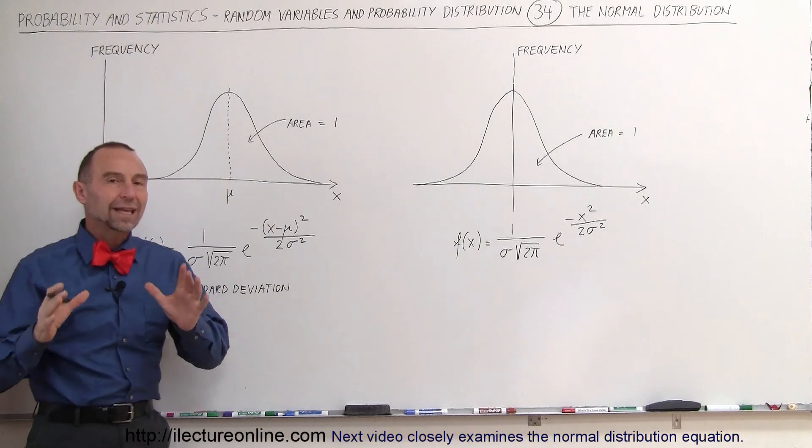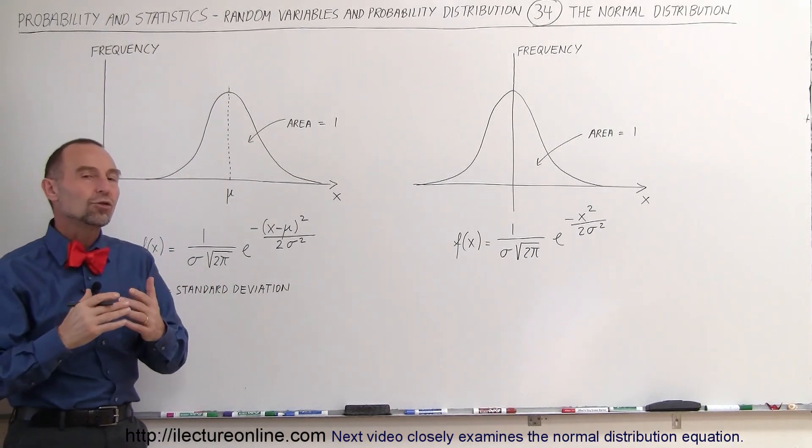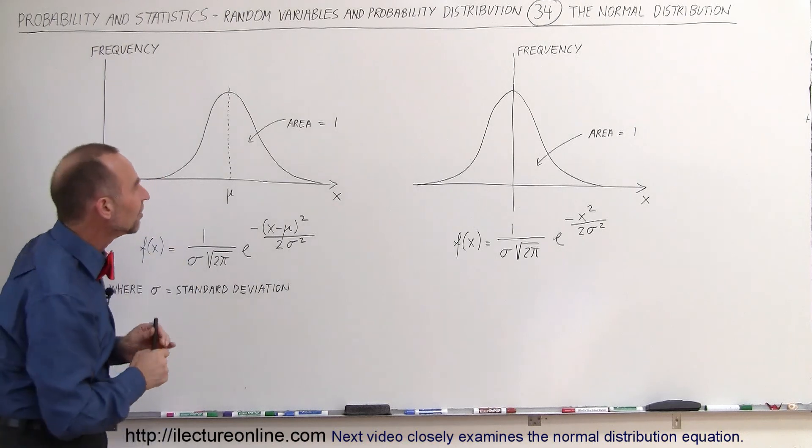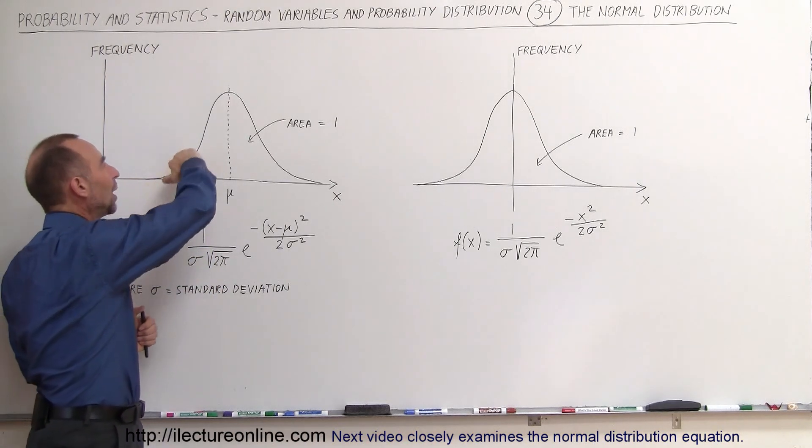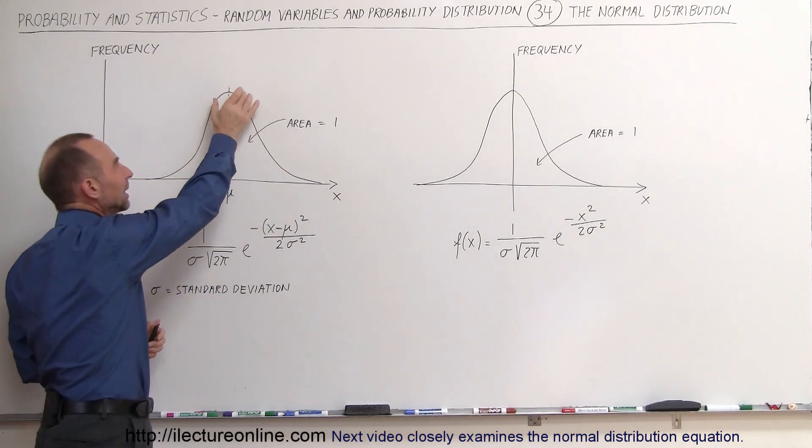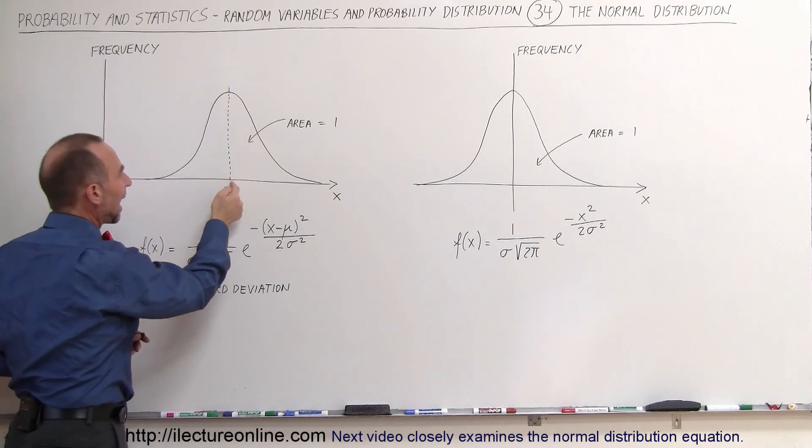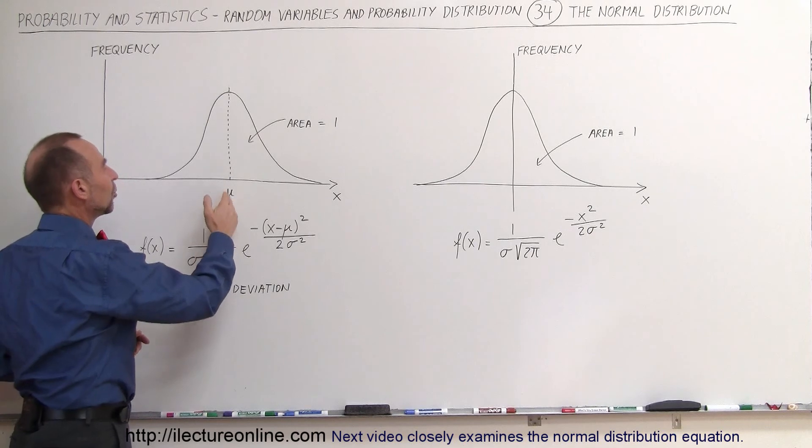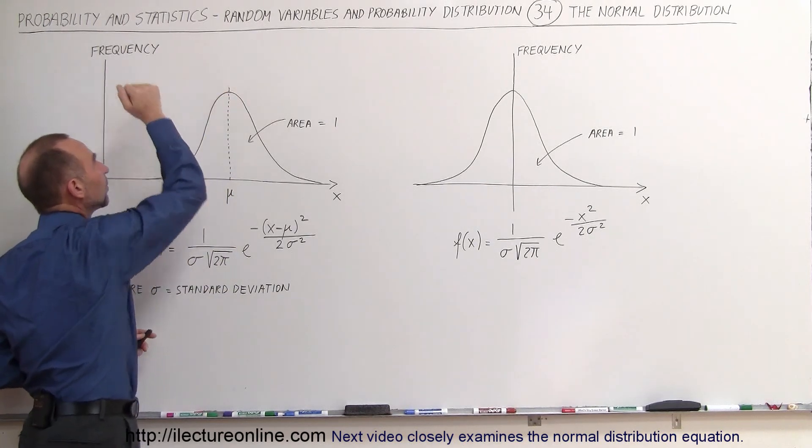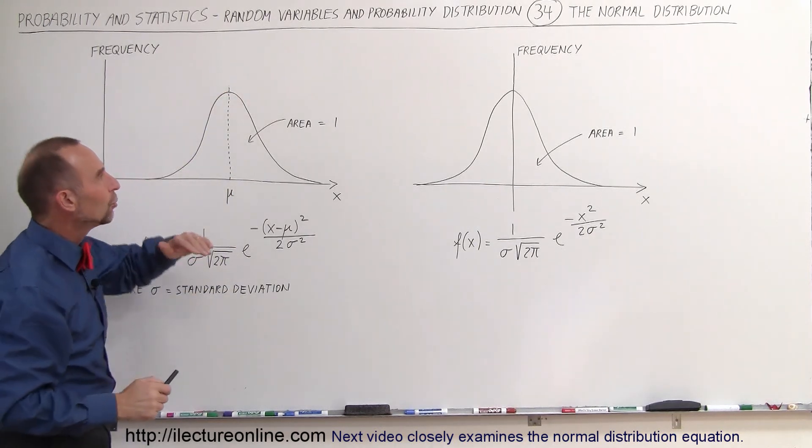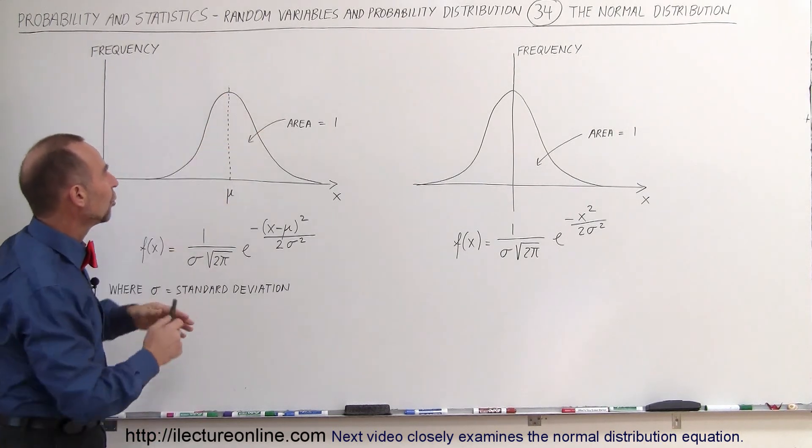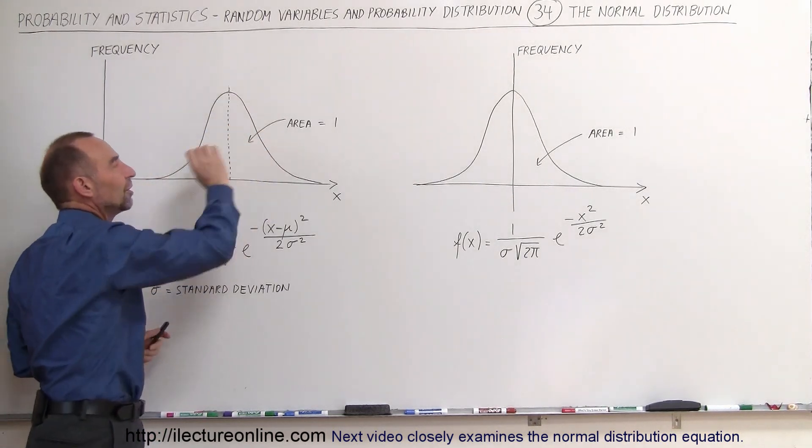So what we're doing today is we're taking a normal frequency distribution and turning it into what we call a normal distribution, which means that we're going to have the relative height indicated again. Notice that this would be the average value of whatever the variable x is. And of course, there would be a point in which we have the highest frequency. But in this case, what we're going to do is we're going to turn it into what we call a normalized function where the entire area underneath the curve is equal to 1.